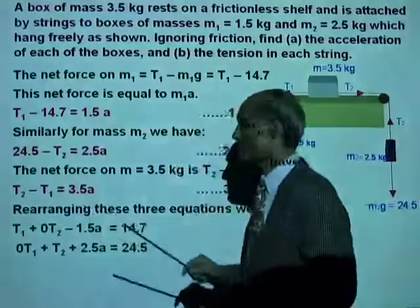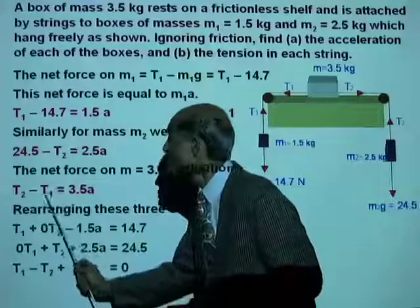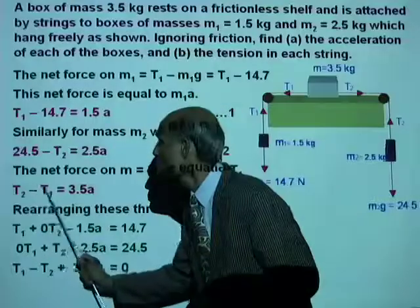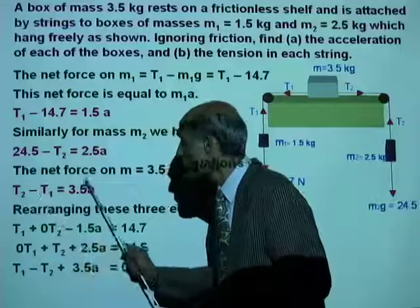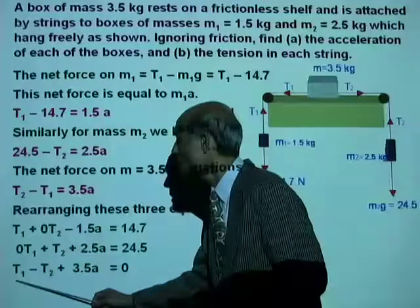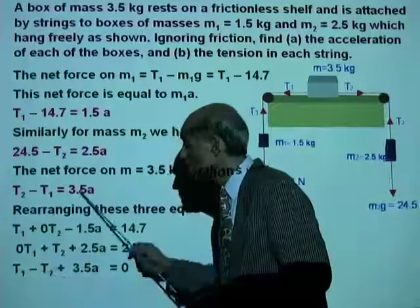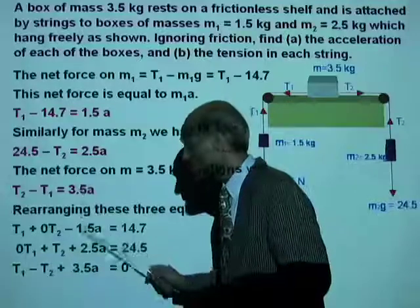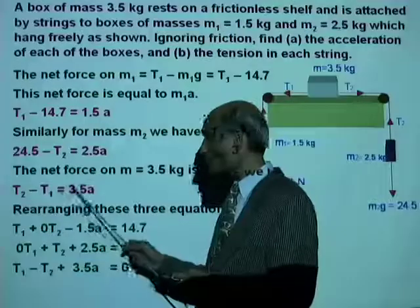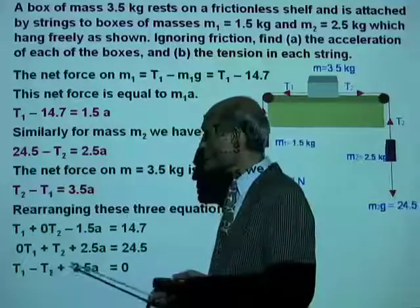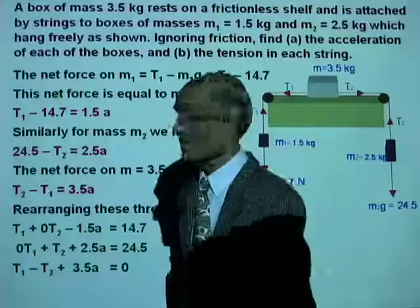How will we write this one? Now look at the way I wrote this one. What I did is, I took both these variables to the right. So negative T1 comes to the right, becomes positive T1. T2 comes to the right, becomes negative T2. And 3.5A is sitting there, plus 3.5A, and the left side is 0. So this equation is T1 minus T2 plus 3.5A equal to 0.